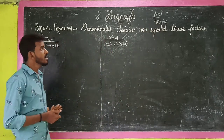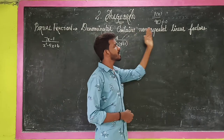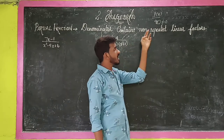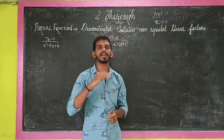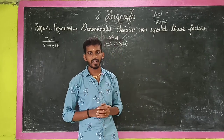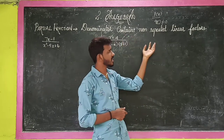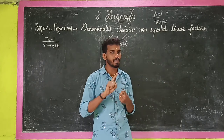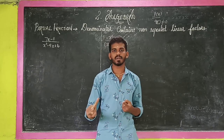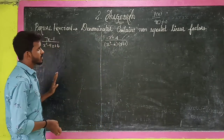We have three types in partial fraction. In this video we are going to see the first type. The first type is where the denominator contains non-repeated linear factors.